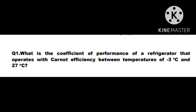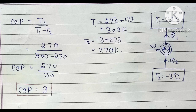Question number 1: What is the coefficient of performance of a refrigerator that operates with Carnot efficiency between temperatures of minus 3 degree centigrade and 27 degree centigrade? The evaporator temperature T2 is minus 3 degree centigrade, which converts to 270 Kelvin by adding 273.